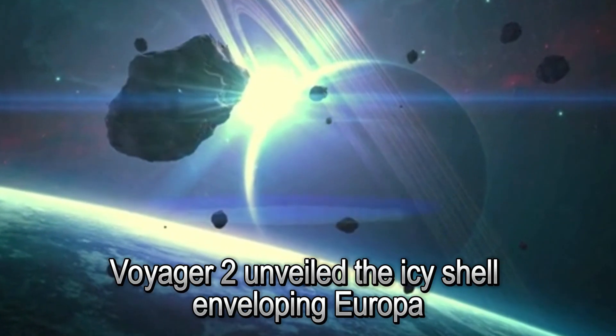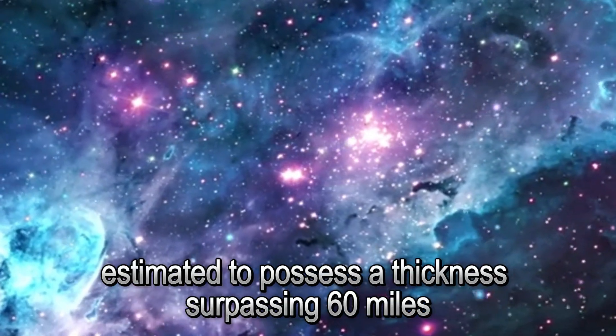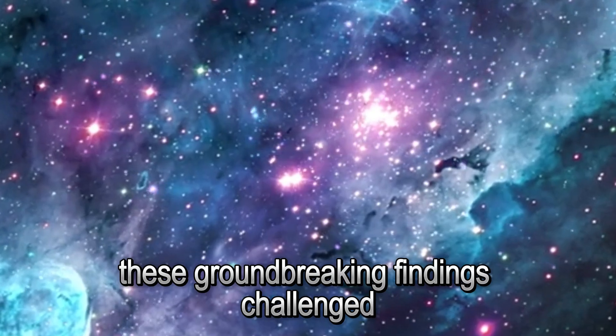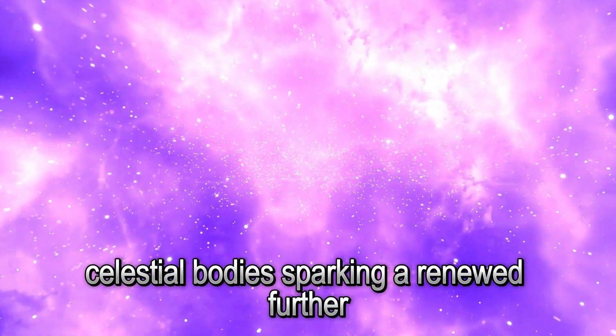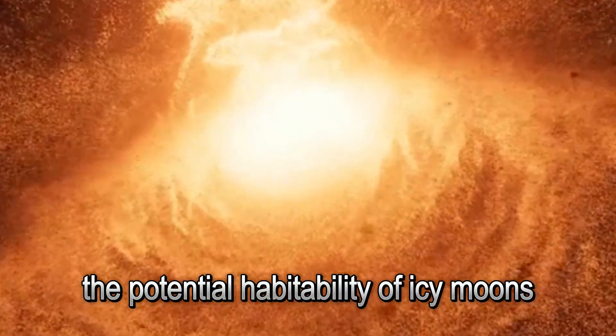Moreover, Voyager 2 unveiled the icy shell enveloping Europa, one of Jupiter's 53 named moons, estimated to possess a thickness surpassing 60 miles. These ground-breaking findings challenged previously held assumptions about these distant celestial bodies, sparking a renewed fervor in investigating the potential habitability of icy moons.